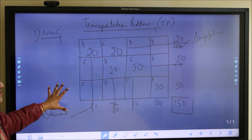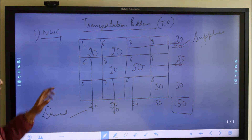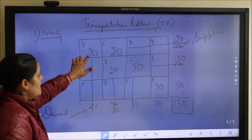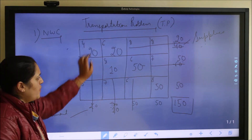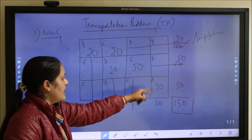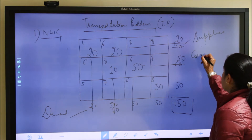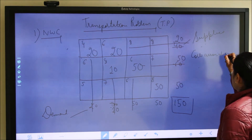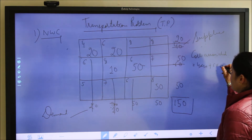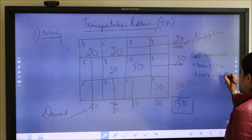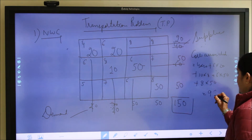Now we find the cost associated with this method. We multiply the per-unit cost by the units allocated in each cell: 4×20 + 6×20 + 8×10 + 6×50 + 8×50. This gives a total cost of approximately 980.